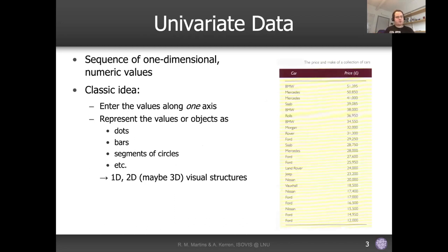Starting with the basics: whenever you think about data — and this applies to data mining, machine learning, or anything — you always start from the data. The most common type of dataset is univariate data, which is basically just a sequence of one-dimensional numeric values — just a bunch of numbers.